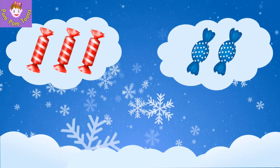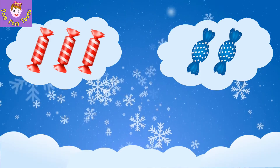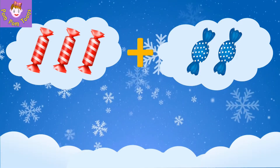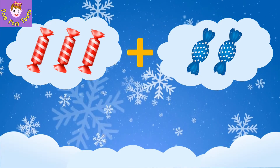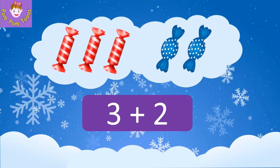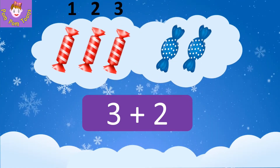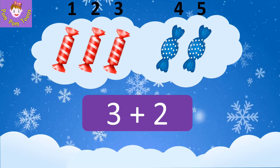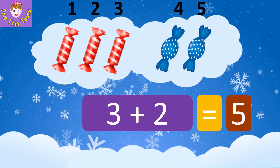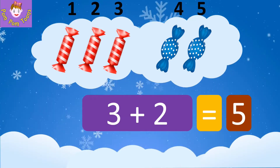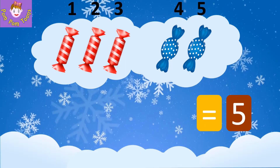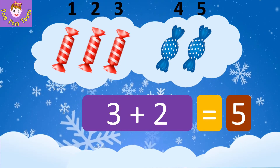Let's learn with one example. Here we have three red candies and two blue candies. Now we want to find the total number of candies, so we will add these two numbers: three plus two. Let's put them together and count: one, two, three, four, five. Three plus two is equal to five.